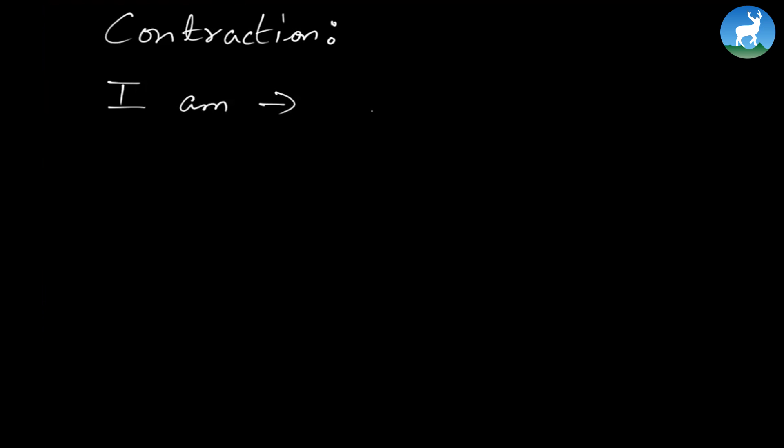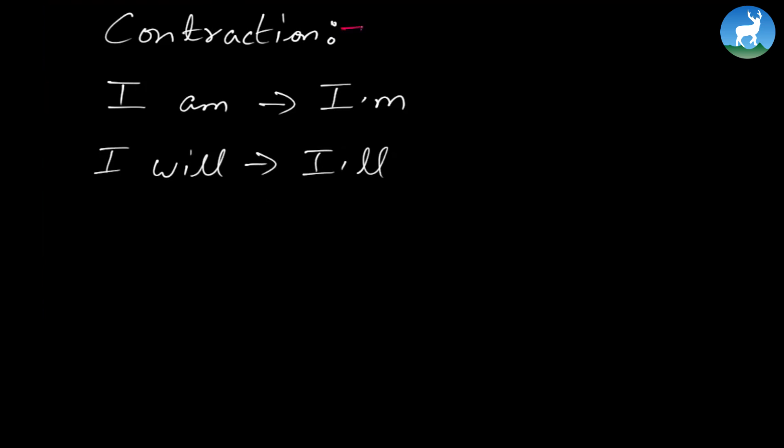The next exercise is very simple. Before we begin, I want to talk about something called contraction. What is contraction? If you go to the dictionary, you'd find that contraction means to compress or to make something smaller. In grammar, when we talk about contraction we are dealing with abbreviations. For example, if the phrase is 'I am,' its contraction would be 'I'm.' In the earlier exercise, we used 'I will,' but as we contract 'I will,' it becomes 'I'll.' This is called contraction.